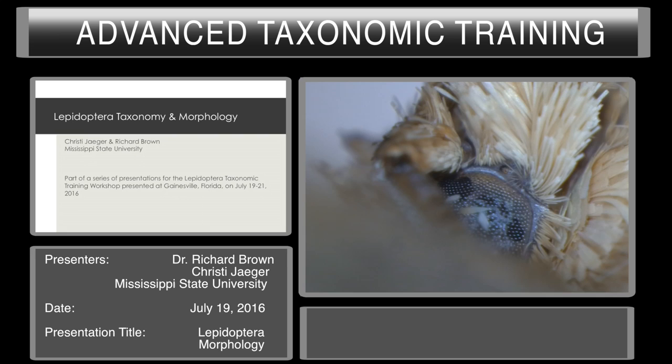The chaetosemata are present throughout the Microleps, and this chaetosemata is distinctive of the family Tortricidae. This moth has erect palpi. So the family is Tortricidae. Here you see the chaetosemata, which are present in tortricids but not present in many other Lepidoptera.